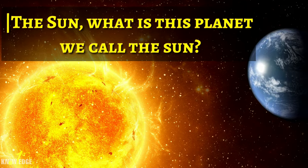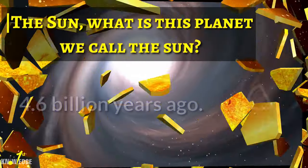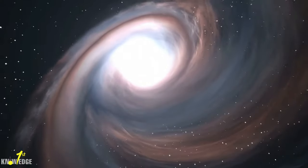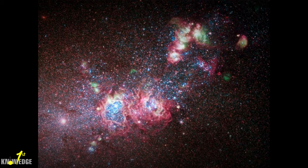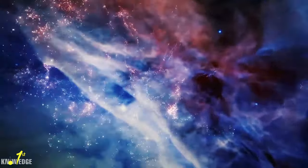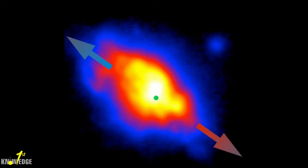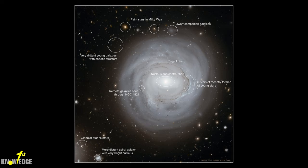The sun, what is this planet we call the sun? The sun was born about 4.6 billion years ago. Many scientists believe that the sun and the rest of the solar system are made up of giant rotating gases and dust clouds called the solar nebula. When the nebula collapsed, it rotated rapidly and flattened into a disk, and most of the material was drawn toward the center to form the sun.